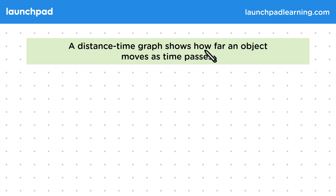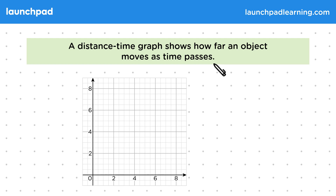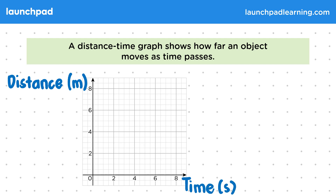A distance-time graph shows how far an object moves as time passes. Remember that to plot graphs we should start by labelling our axes. For a distance-time graph, our y-axis represents the distance travelled in metres and our x-axis represents the time taken in seconds. There are many situations we can describe using a distance-time graph, for example a car journey or a long distance race.